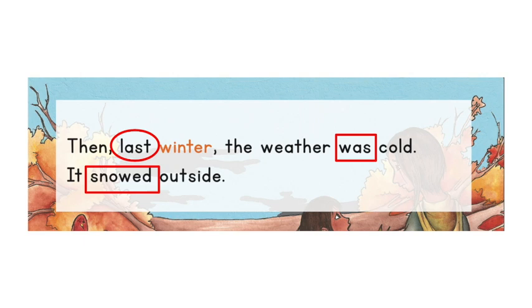So we know that the story is in the past because she has this word last. Last winter. That tells us she's talking about the past. The verbs are in the rectangles. We have the weather was cold and it snowed. Let's think about that.